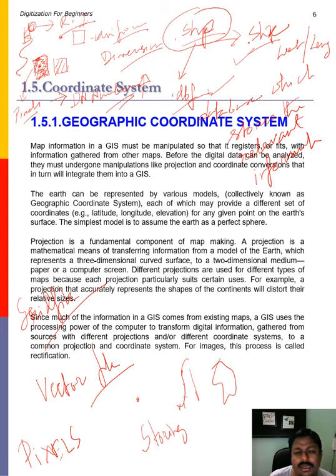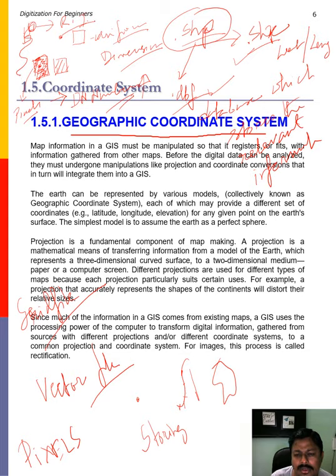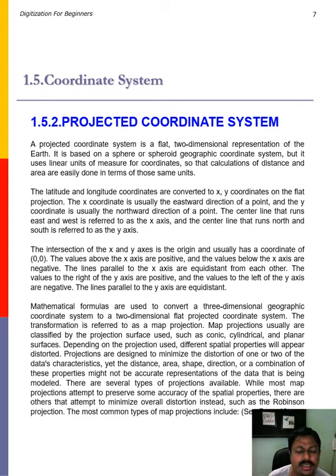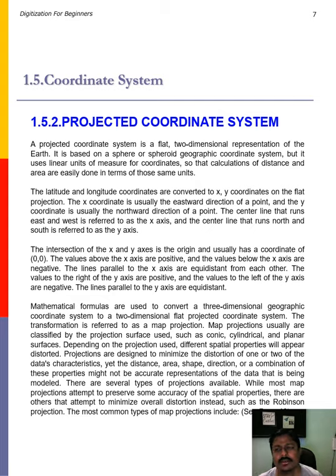Now let us look at the geographical coordinate system. Any point can be represented by a coordinate system using X, Y for 2D, or X, Y, Z for 3D. Related to this, coordinate systems will be explained in another presentation.